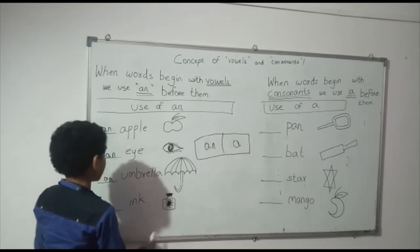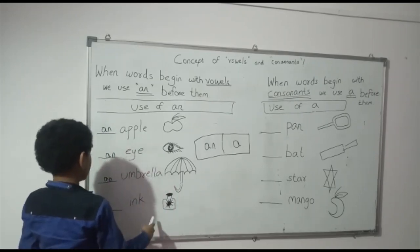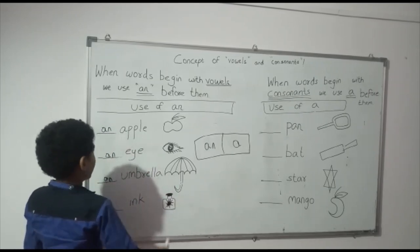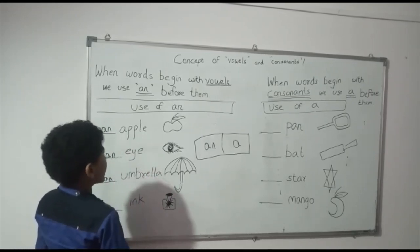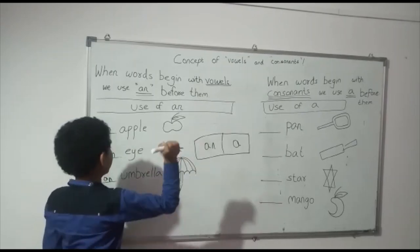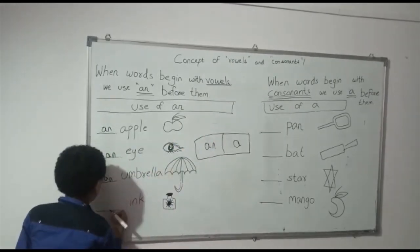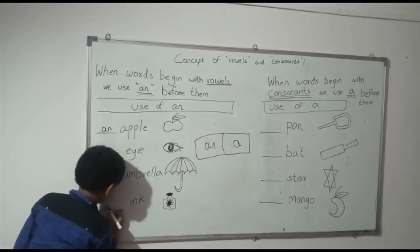This is an ink. I for ink, and I is a vowel. So we use AN again.